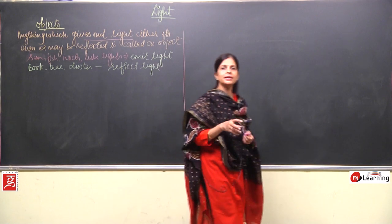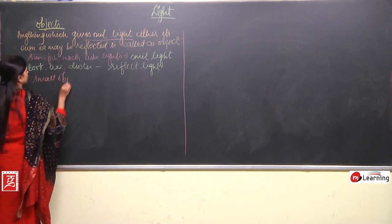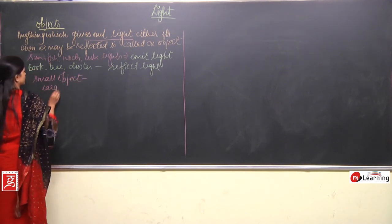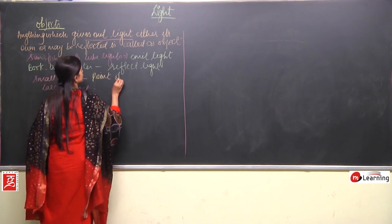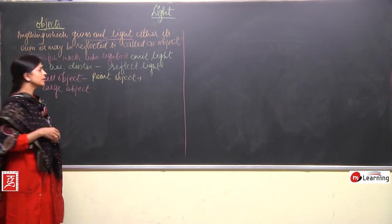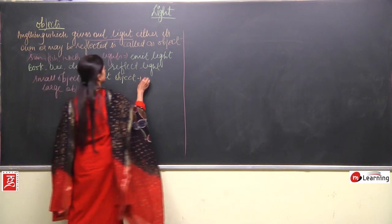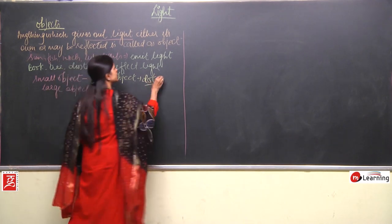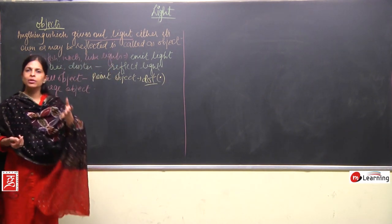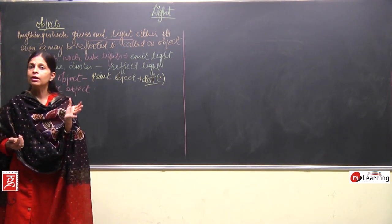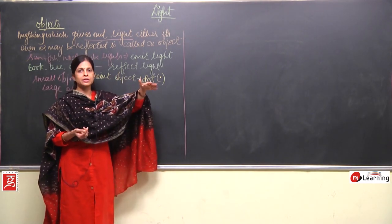This object can be of various sizes — very small or very large. A small object is known as a point object. In ray diagrams, a very small object is shown with the help of a dot. If the object is large, it is known as an extended object.